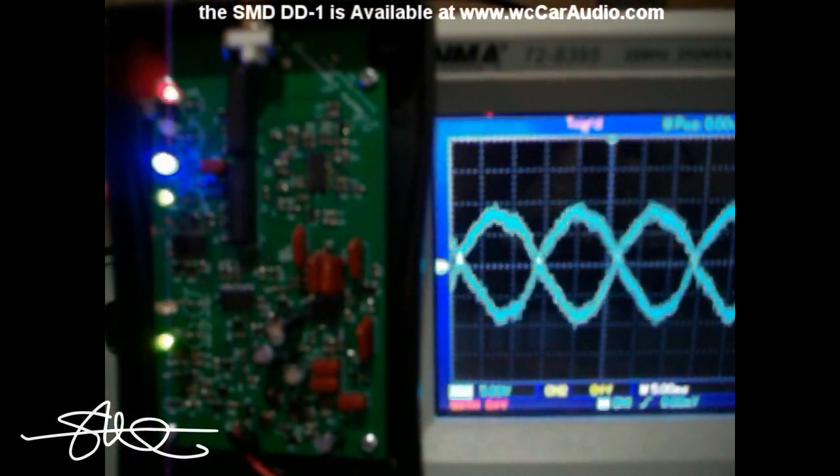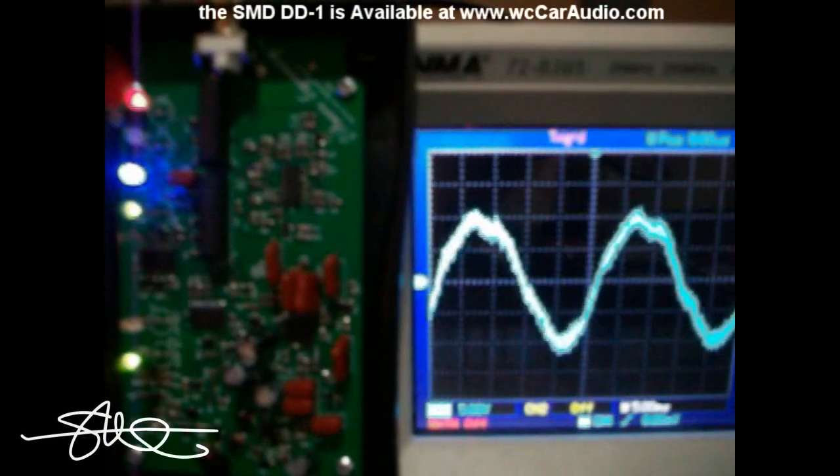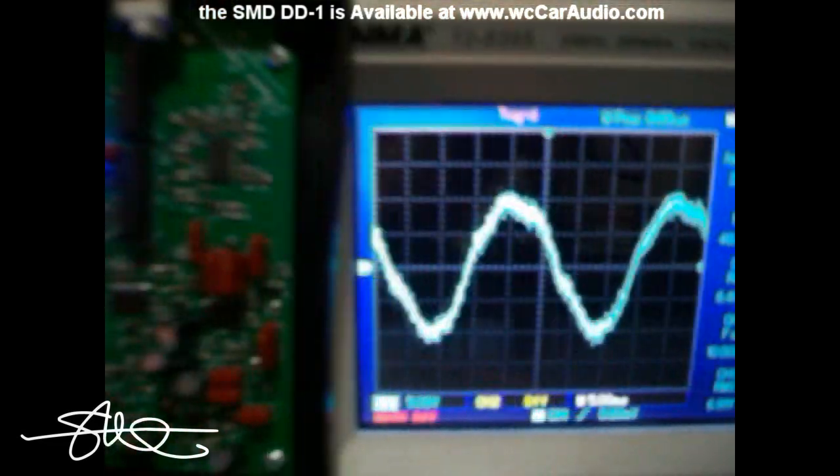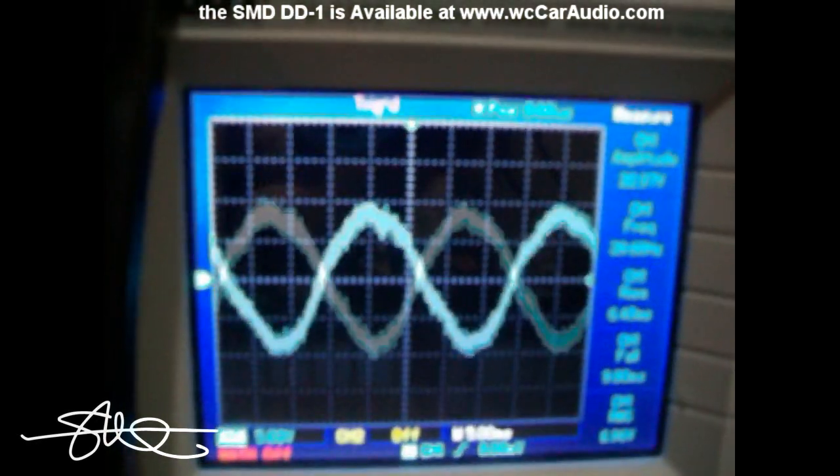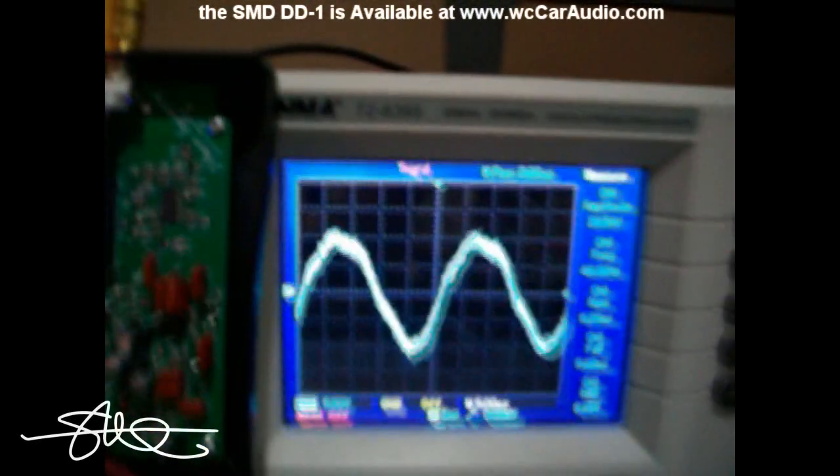I'll keep turning it up, turning it up. You can see that distortion light is just staying on the whole time because look at the signal coming out of this line level converter. Well, actually ground loop isolator in this case. It is just a disaster.